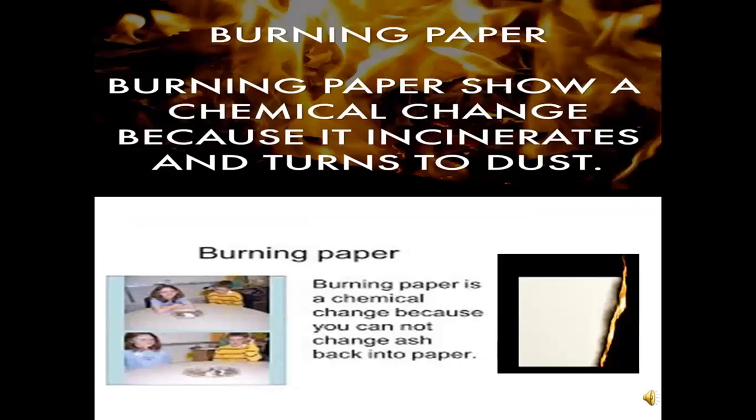Burning of paper — burning is one example of a chemical change. Burning a piece of paper gives entirely new substances such as carbon dioxide, water vapor, smoke, and ash. Heat and light are also given out during the burning of paper. We cannot combine the products of burning to form the original paper again, so it is a permanent change.